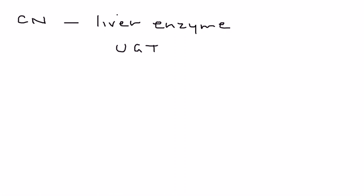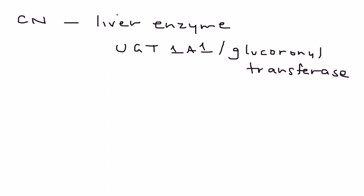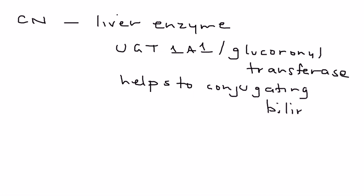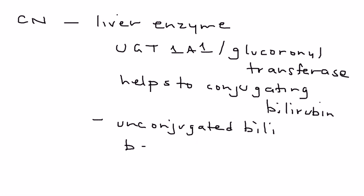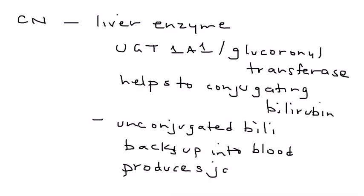Krigler-Najjar is caused by a liver enzyme problem. That enzyme is UGT1A1, sometimes referred to as glucuronosyltransferase. This enzyme is responsible for conjugating bilirubin, so when its activity is abnormal, you get a large amount of unconjugated bilirubin backing up into the blood, which produces severe jaundice and icterus.